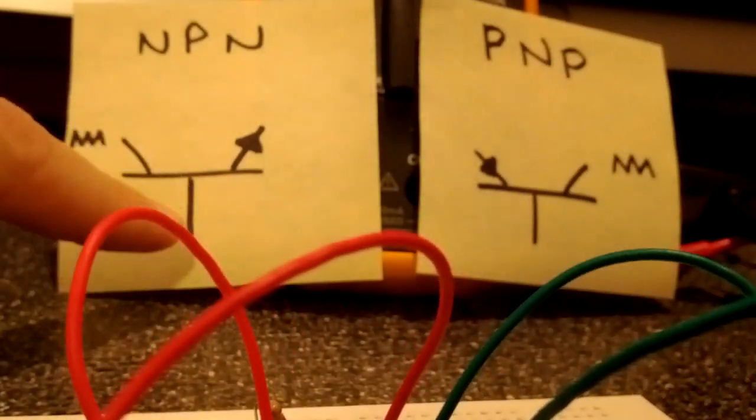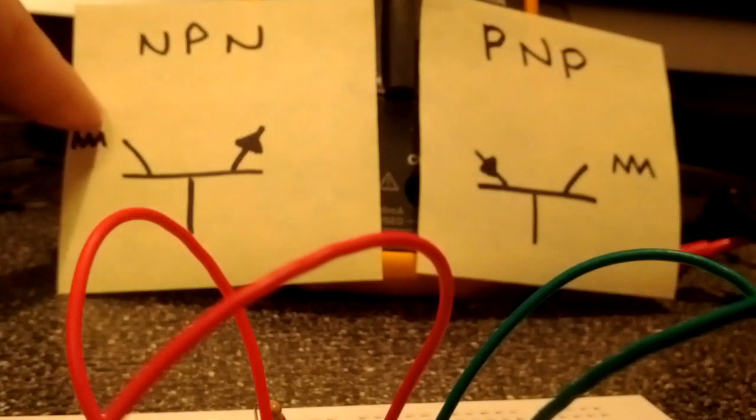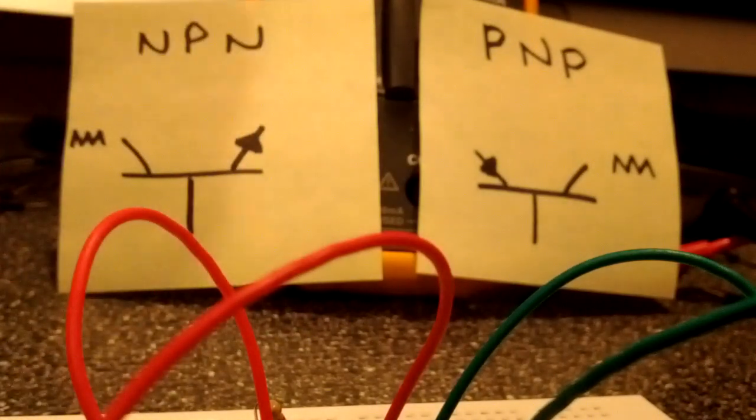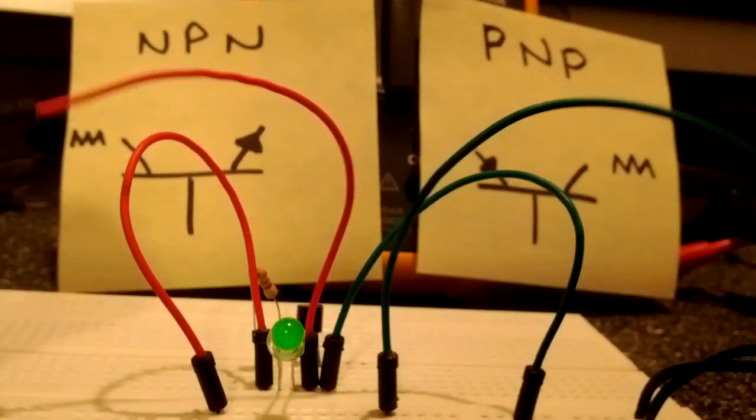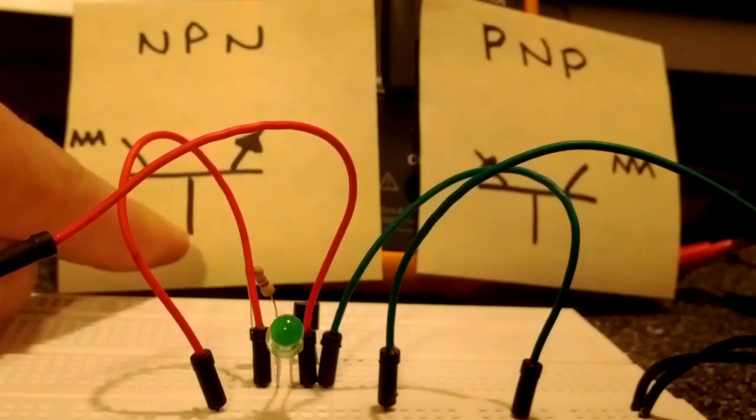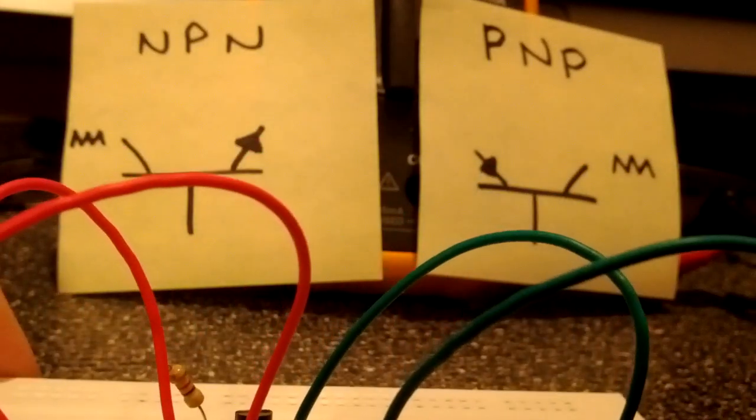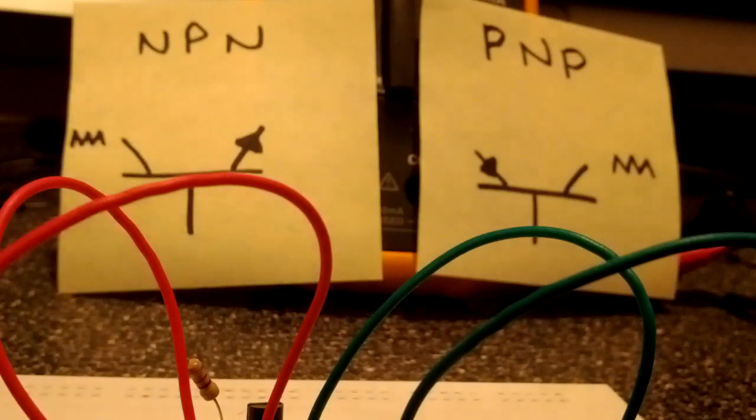That small amount of current that's flowing from the base into the emitter is allowing a large amount of current to flow from the collector out of the emitter. The real take home point here is that I'm using power, I'm using positive current to signal this. It's a positive current signal that's causing the other current to flow across. It's a source. I'm a sourcing sensor right now.